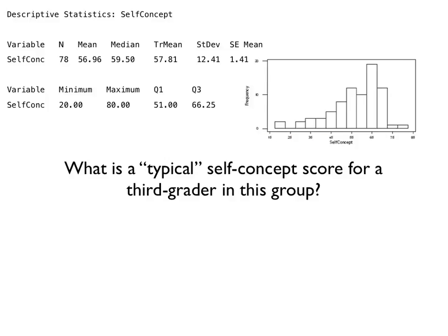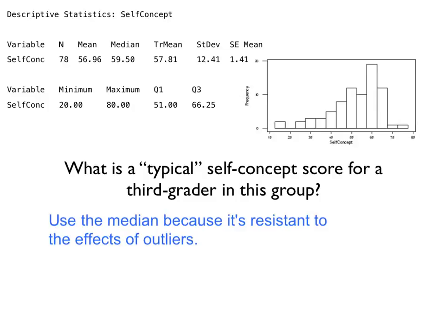that means that the mean is sort of being dragged down by these low outliers. In other words, the mean is not resistant. The median is, and so the median would be perhaps a better choice for describing a typical score. And as a result, we would say that the typical score is somewhere around 59.5.